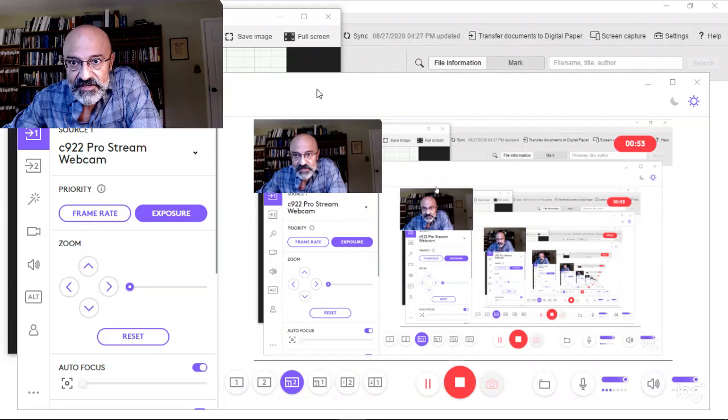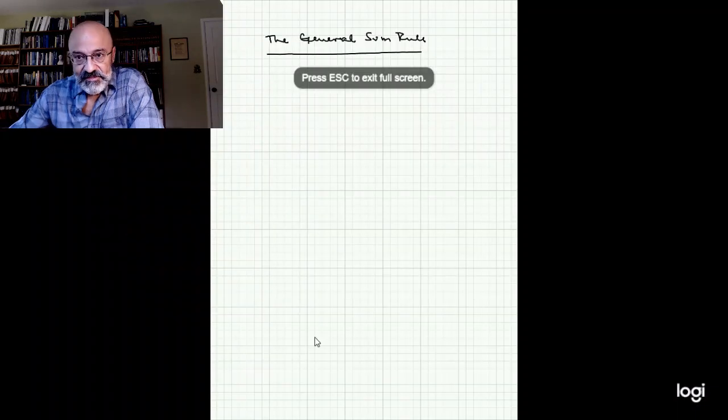So what we want to do now is find the general sum rule for situations in which A and B are arbitrary. So this is how it works. And here I would like to go to my tablet.